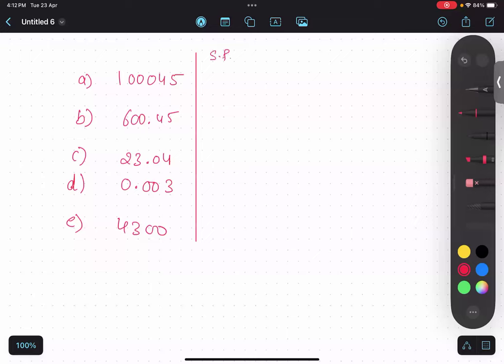So for A, I think it'll be one only. One. And then for B, it'll be 600.5. I think it'll be six. No. I'm asking how many significant figures are there? Six significant figures for A.